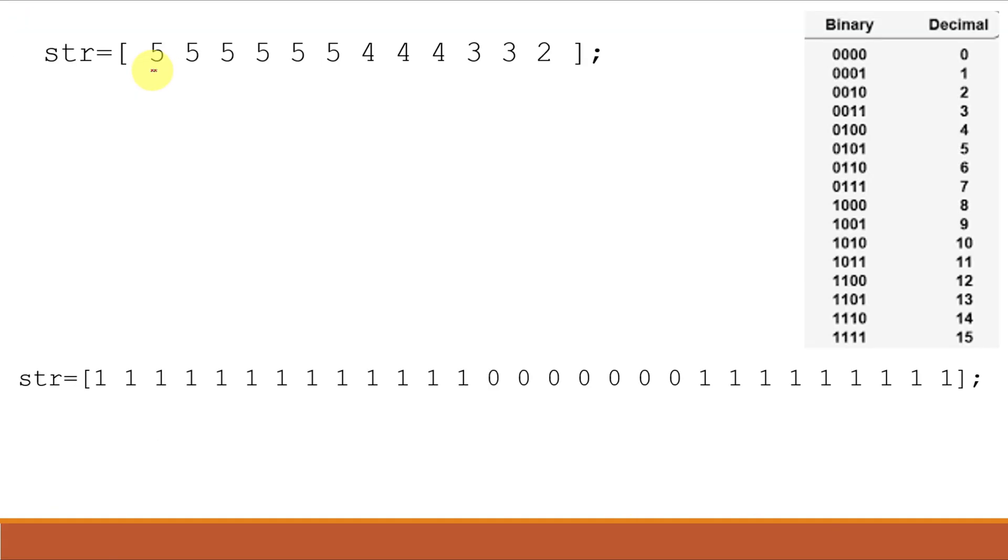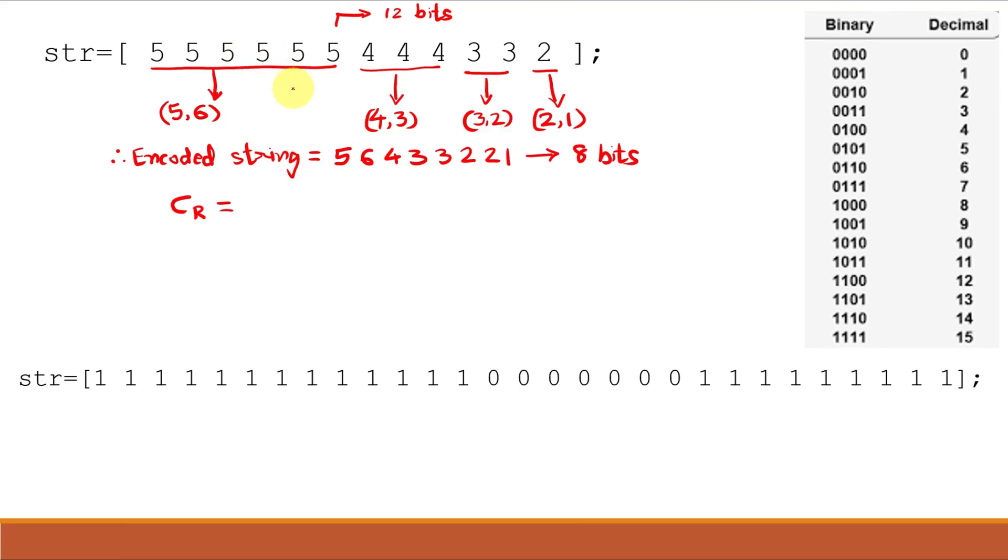Let us understand with examples. This is the string we want to compress which is originally a 12 bit string. So G,L where G is the symbol and L is the length. The symbol is 5 and the length is 6. Similarly, the encoded string is 5,6, 4,3, 3,2 and 2,1. The compression ratio that is achieved, assuming that both are 8 bit images, uncompressed image that is 12 bits upon compressed string that is 8 bits, so the compression ratio is 1.5. The same example we will also implement in MATLAB.